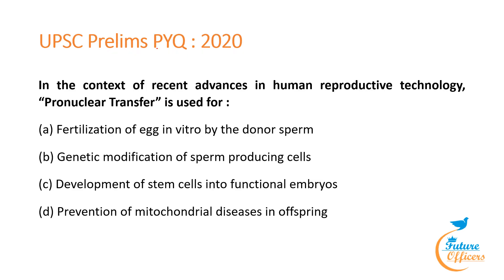A UPSC Prelims 2020 question asked: In the context of recent advances in human reproductive technology, pronuclear transfer is used for — answer: prevention of mitochondrial disease in offspring.